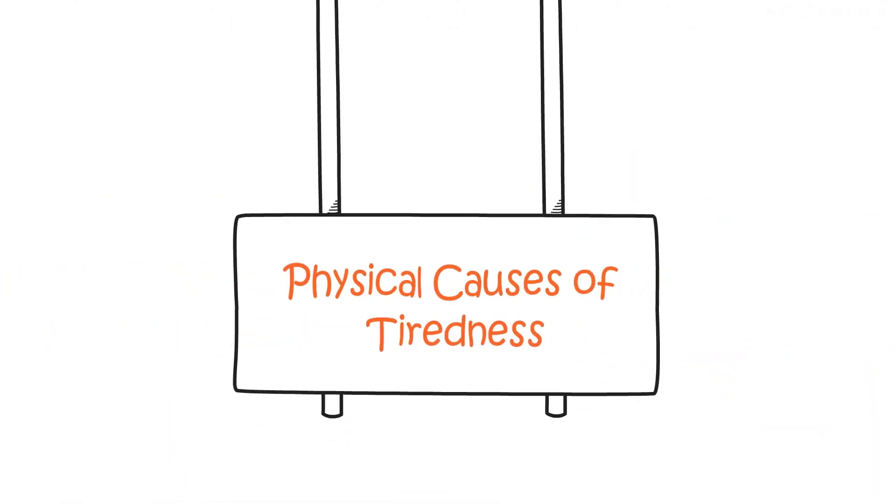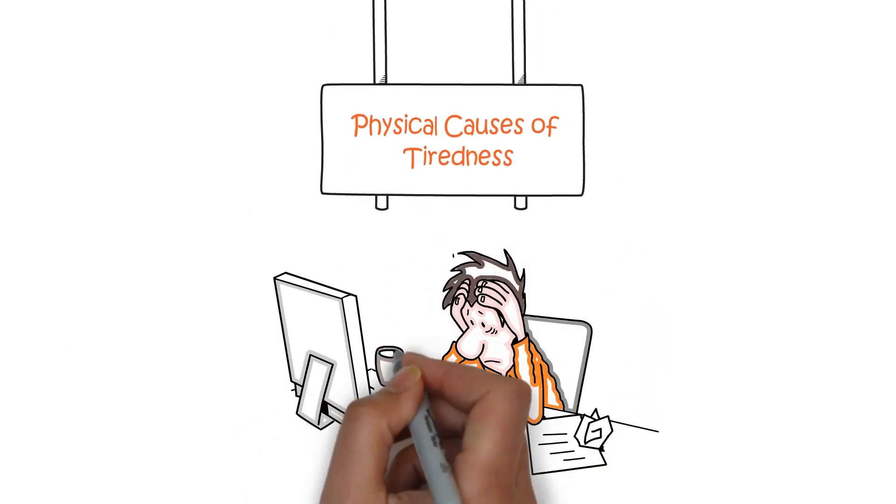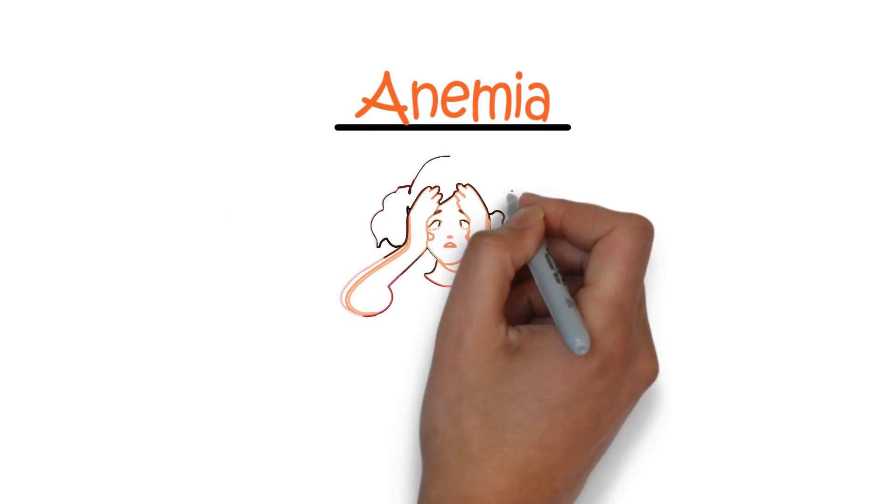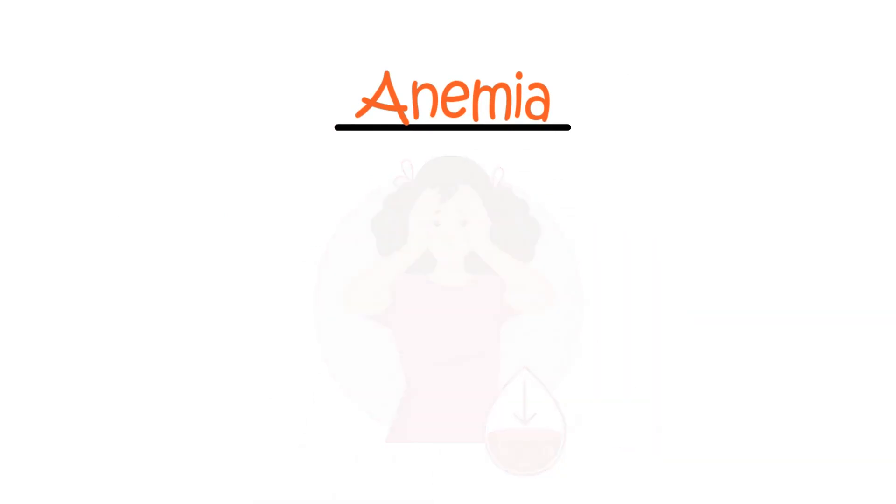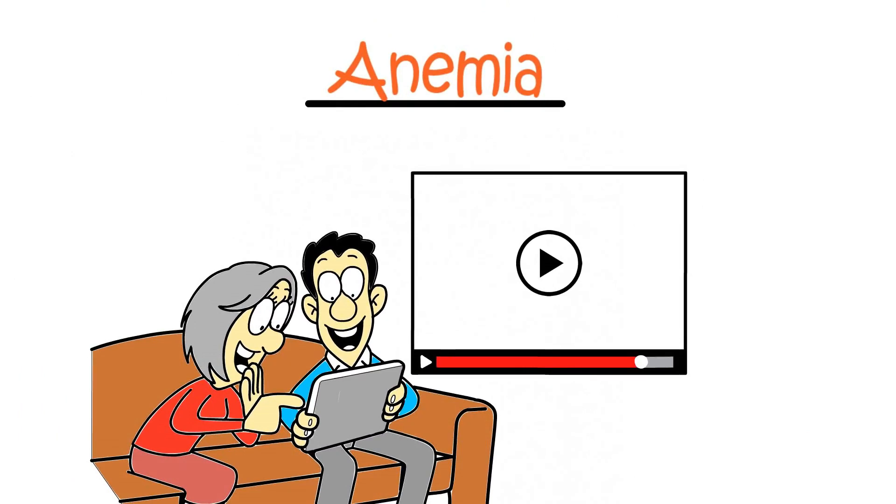Physical causes of tiredness. Tiredness can be attributed to a wide range of physical illnesses and conditions. Some of the notable examples include anemia, a tendency to be lacking in iron. I have done a full video about this so please check that out if you'd like to learn more.